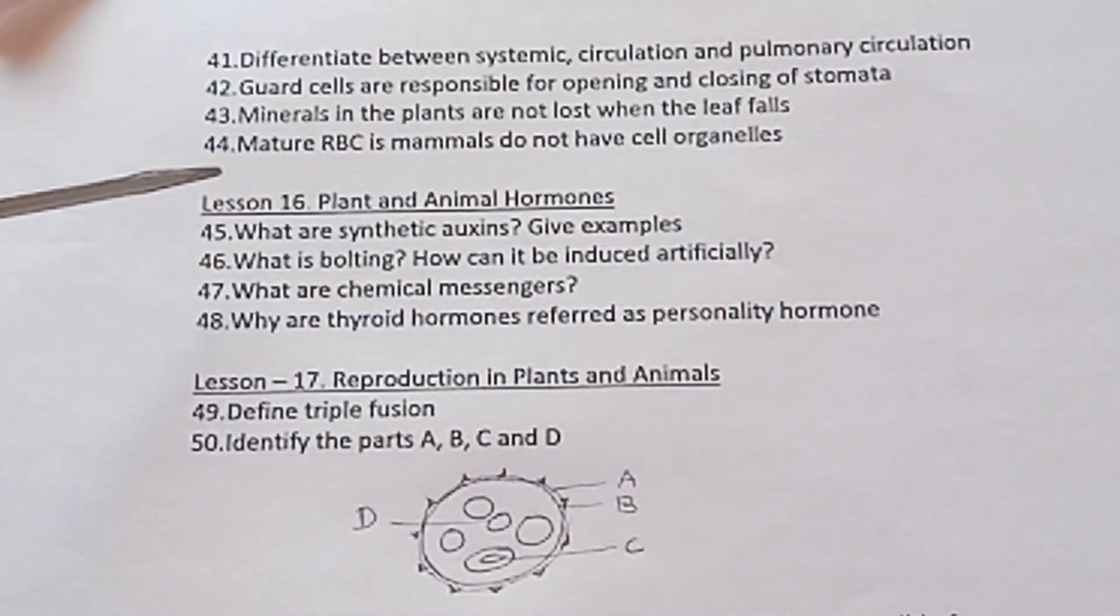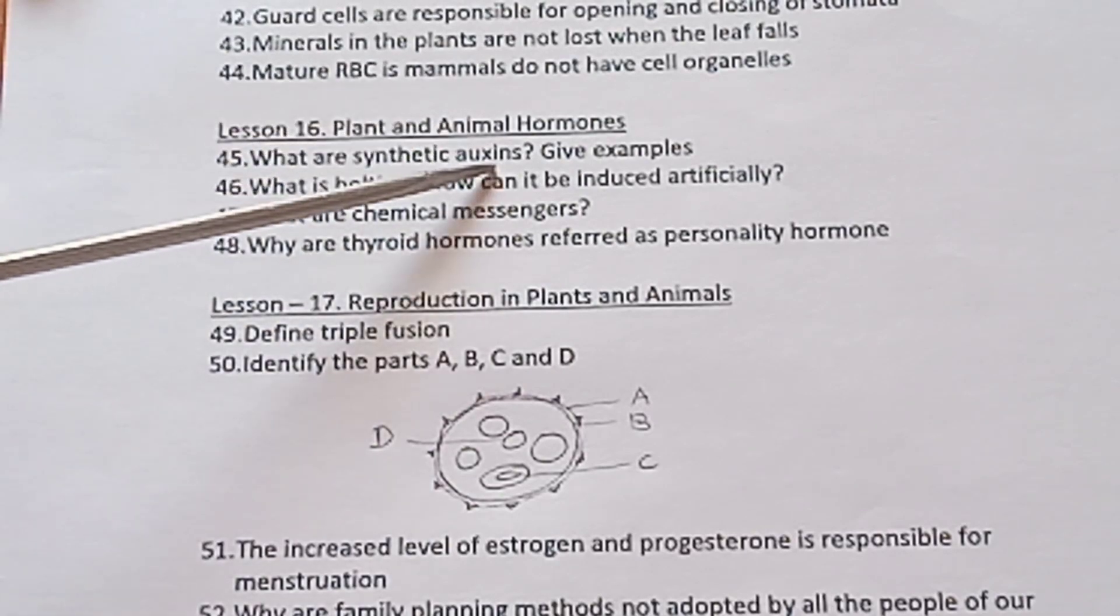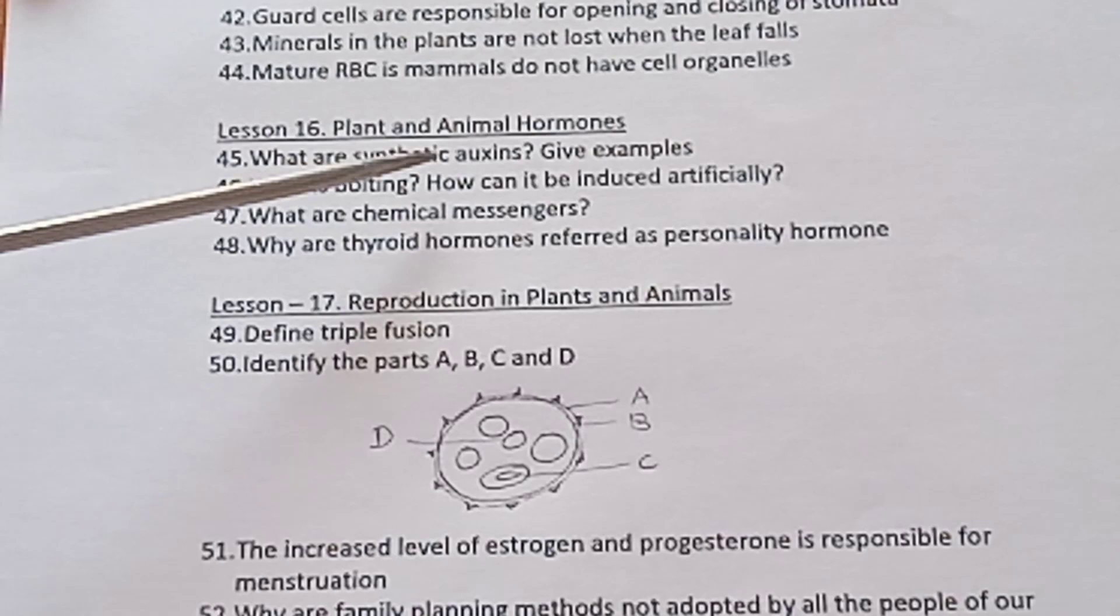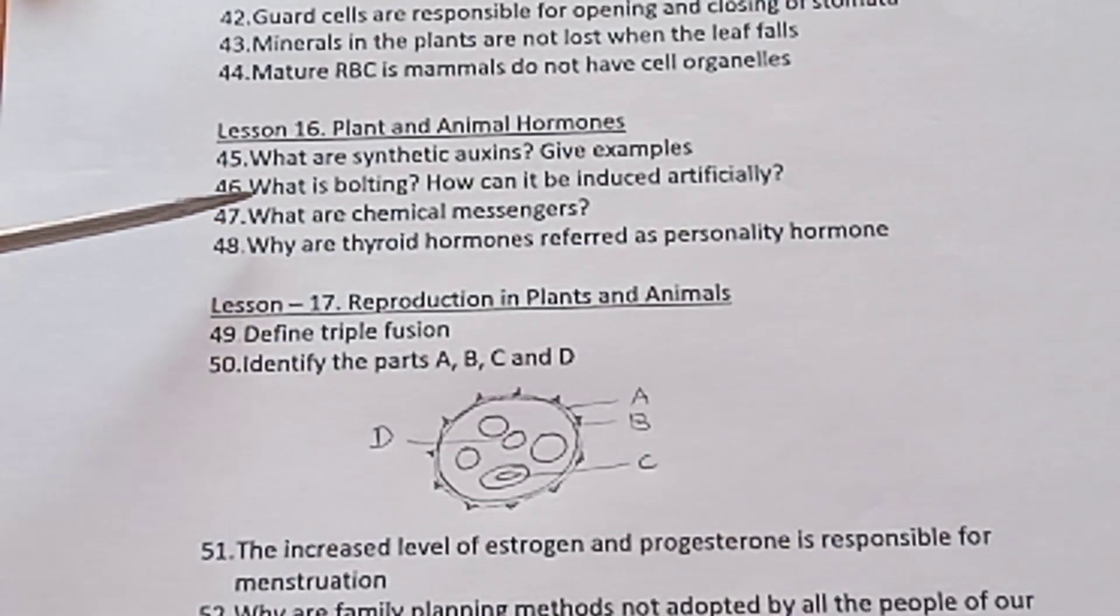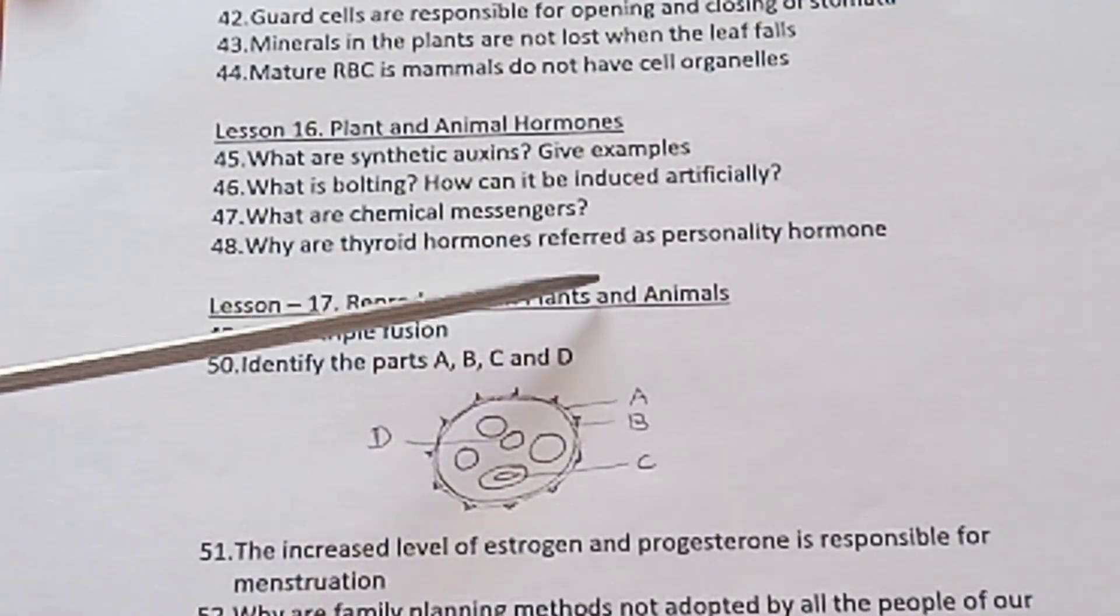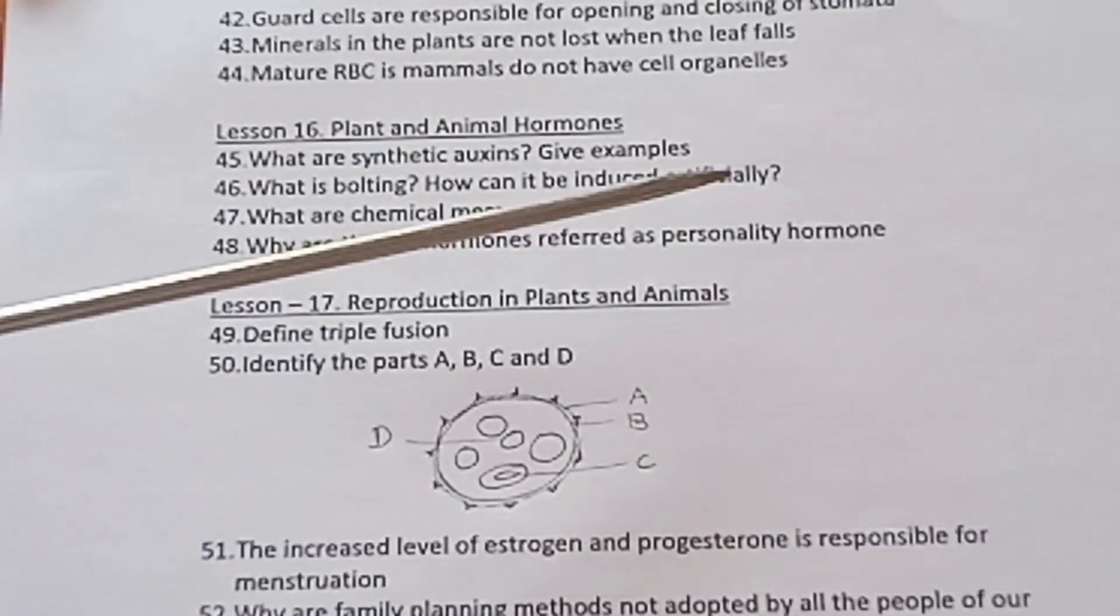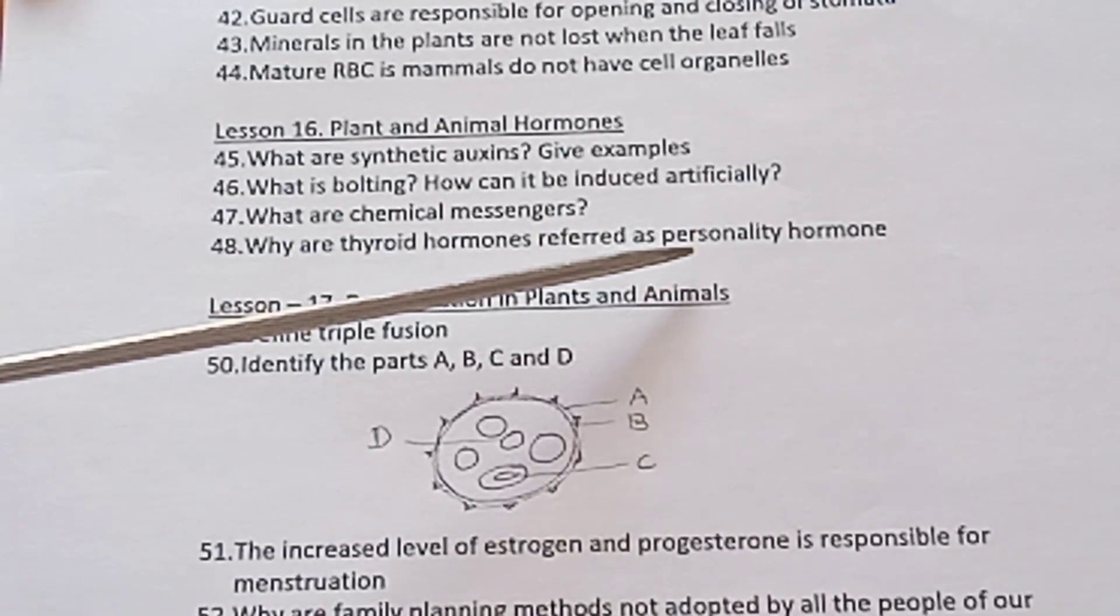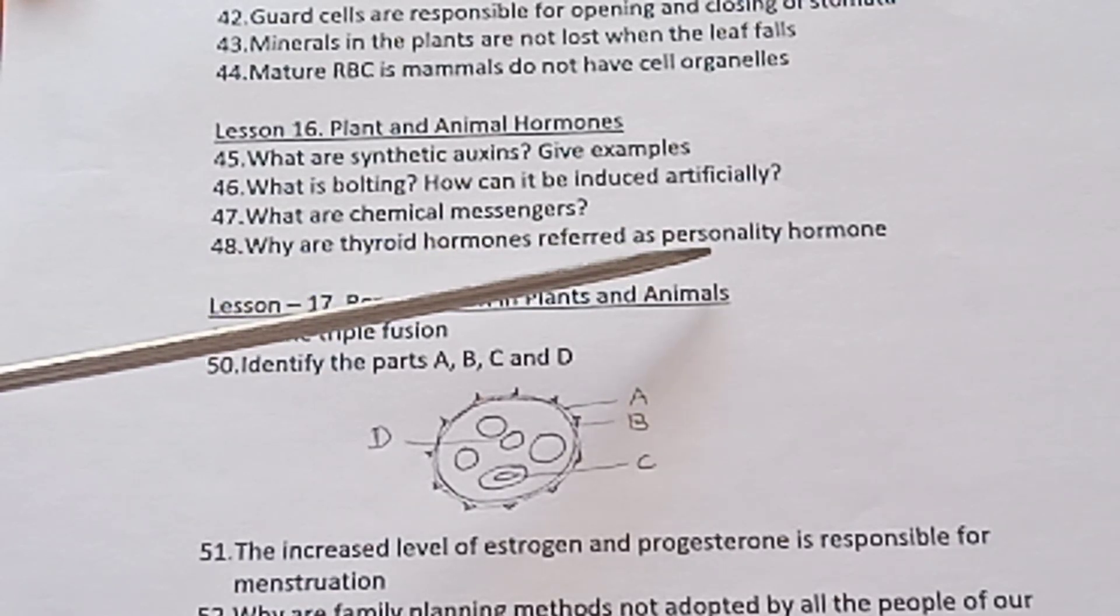Lesson 16 Plant and Animal Hormones. What is synthetic auxin? Give examples. What is bolting? Very very important question. How can it be induced artificially? What are chemicals? What is thyroid hormone referred as personality hormone? Two marks located. Just you have to write two lines. Suppose it is asked in 4 marks or 7 marks, you have to write down where is the hormone secreted, location, functions of this hormone, diagram.